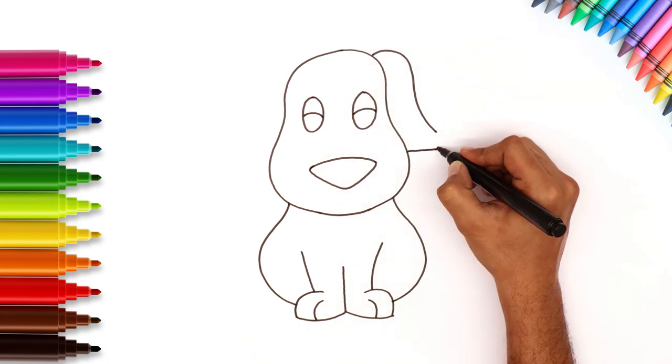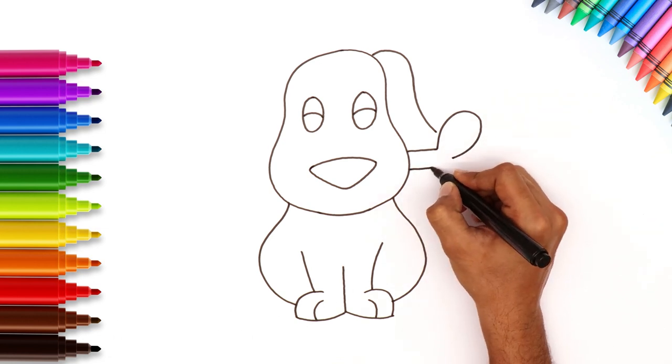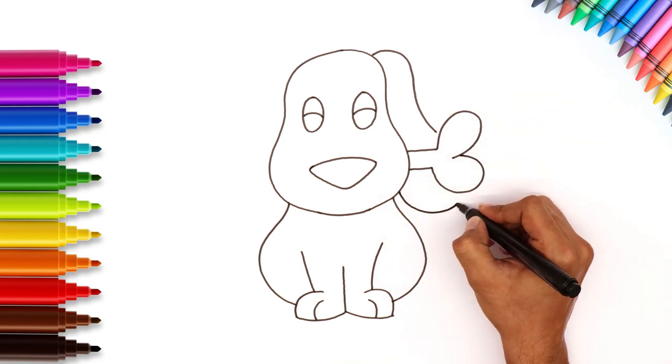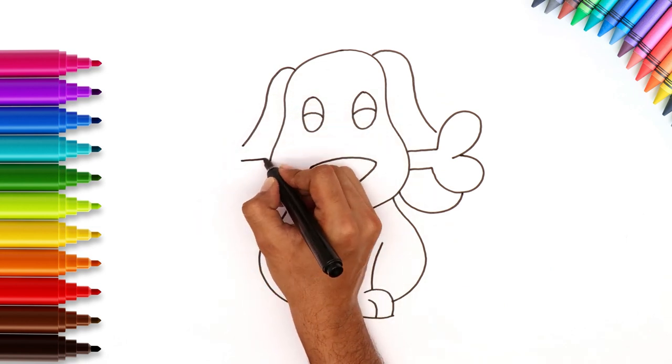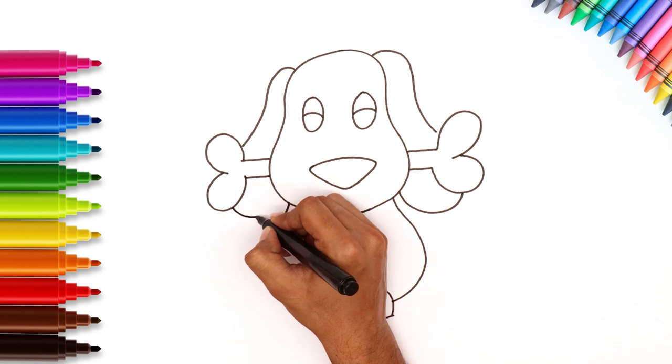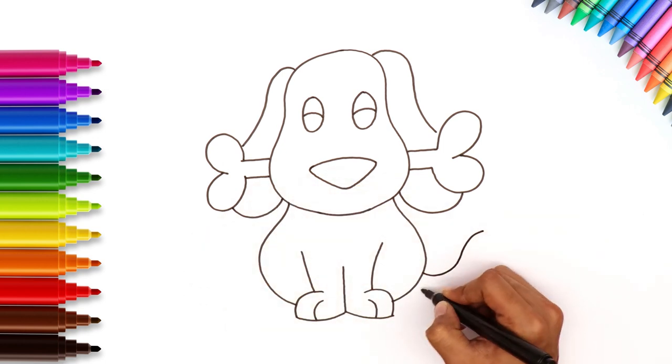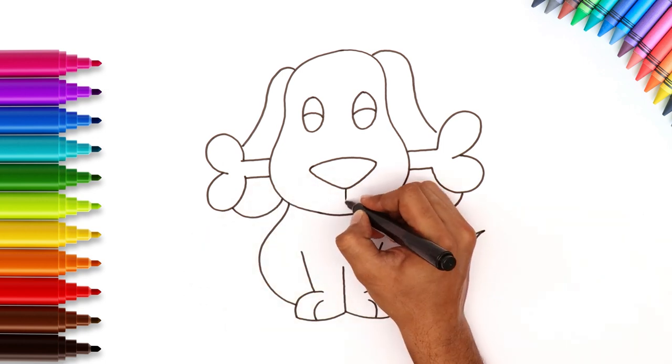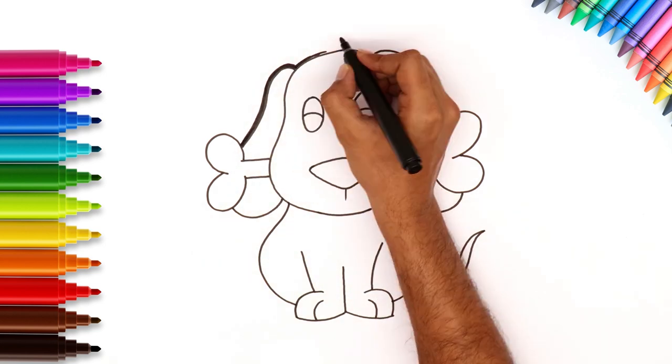Let's draw a yummy treat for our friend. Don't forget the ears. And of course, don't forget the tail. Finish off with a nice neat outline.